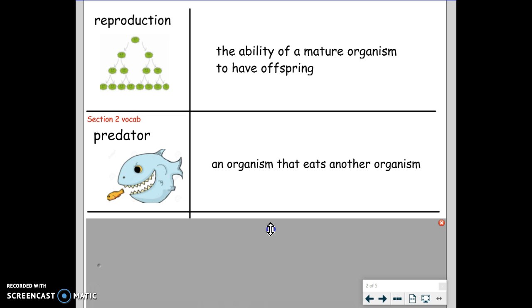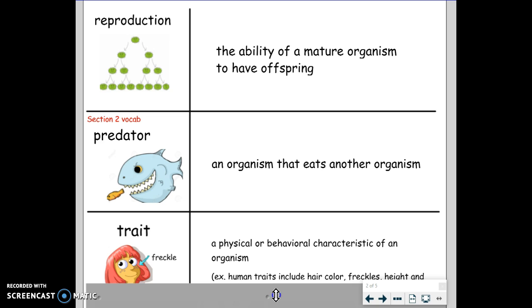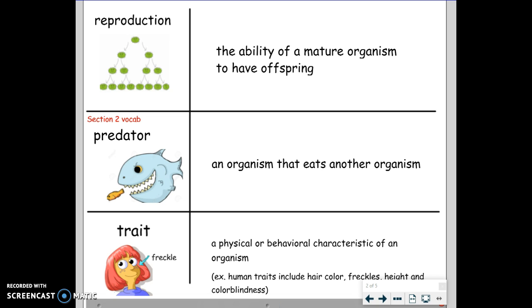Card number two. Trait. A physical or behavioral characteristic of an organism. In parentheses, there are some examples that you can add to your definition.